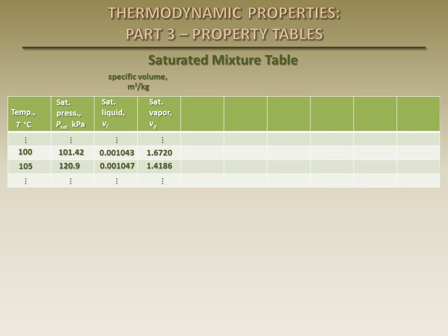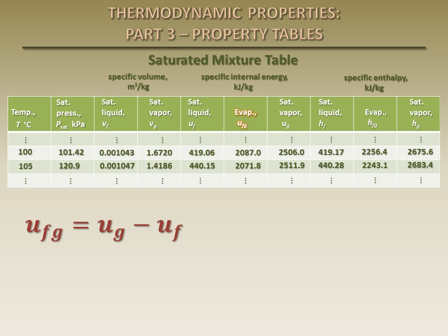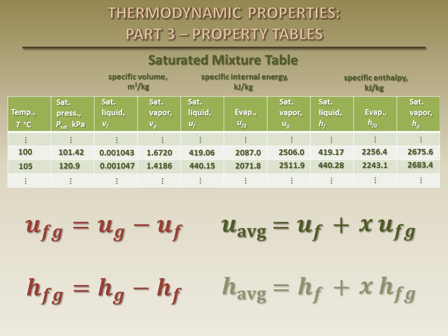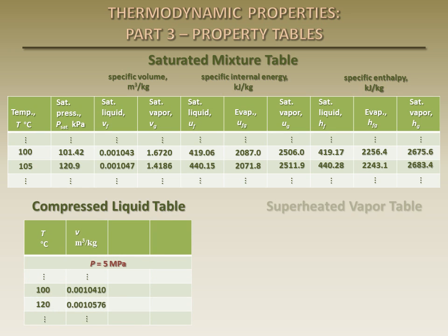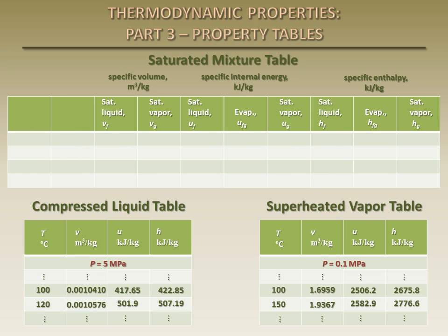In addition to the specific volume data, the saturated mixture tables also include data for specific internal energy and specific enthalpy. For convenience, values of the difference between the specific internal energy of a saturated vapor and a saturated liquid are also provided in the tables, as is this property for specific enthalpy. The same relationships developed for average specific volume and quality can also be applied to specific internal energy and specific enthalpy. The compressed liquid tables and superheated vapor tables also include data for specific internal energy and specific enthalpy. Properties of saturated liquid-vapor mixtures are also given in a separate table as a function of pressure.